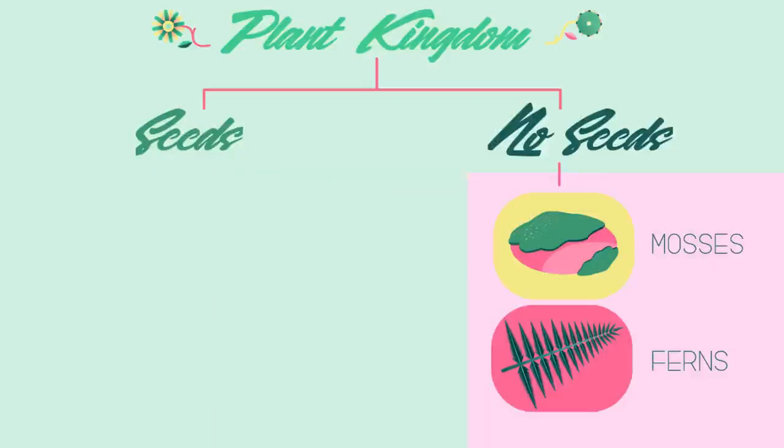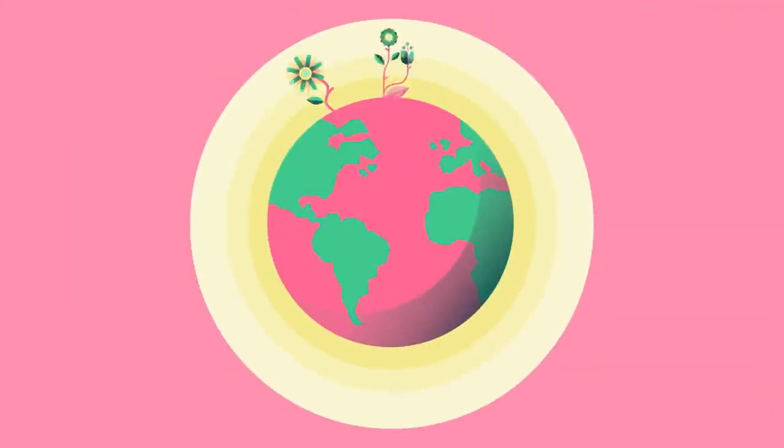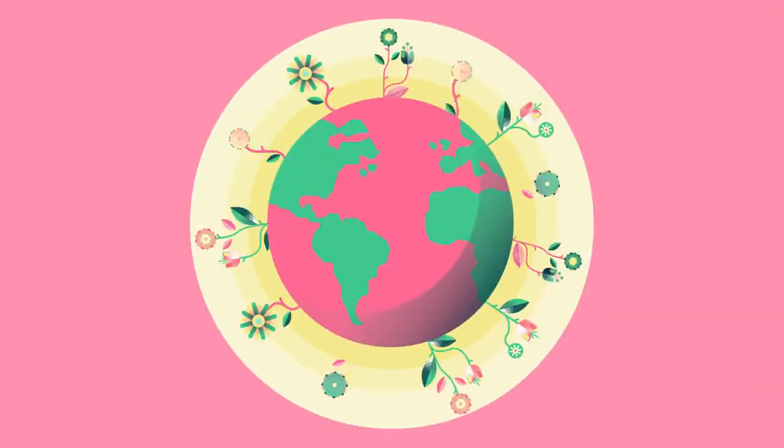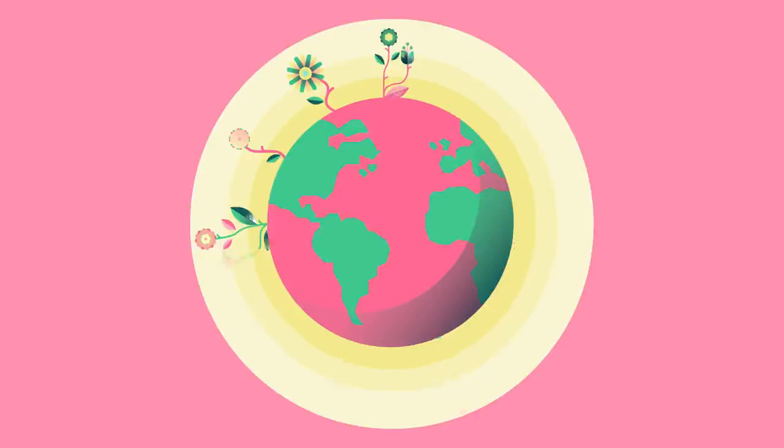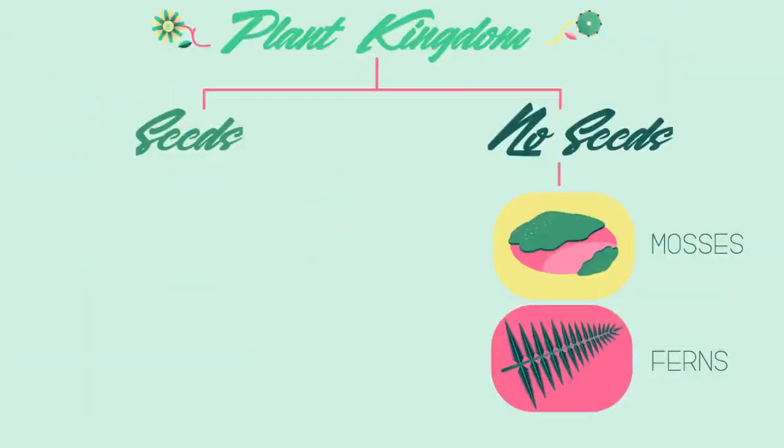Other plants use asexual reproduction and grow new plants from rhizomes or tubers. The evolution of a seed was a huge evolutionary step for plants — it meant they could grow anywhere on Earth, in any environment, and were no longer limited to extremely moist conditions.